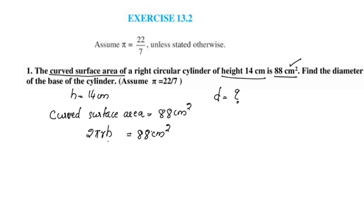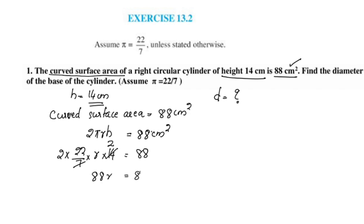The radius is half the diameter of the cylinder. Solving the equation, the value gives us the radius equal to 1 cm.